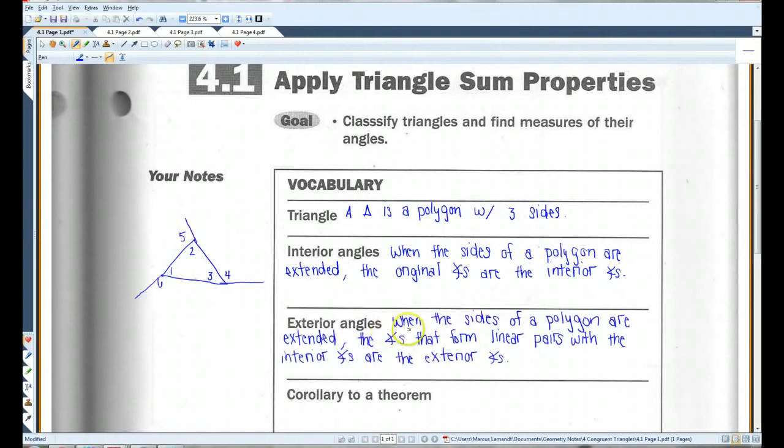Exterior angles, when you extend the lines of a particular polygon, the exterior angles will form linear pairs with the interior angles. So, for example, over here, angles 4, 5, and 6 are exterior angles. They're outside the polygon. In this case, it's a triangle.